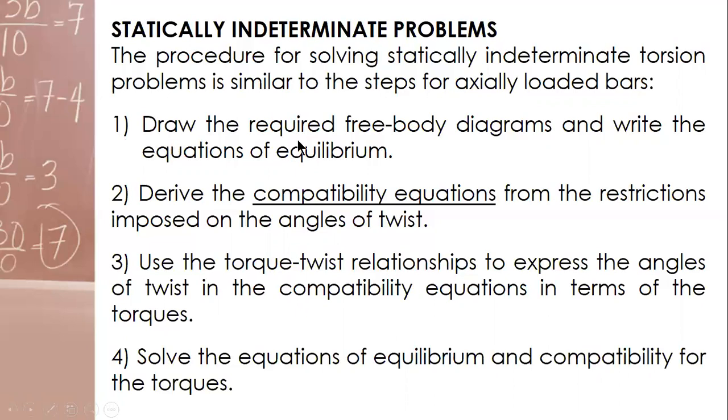So first step is you draw the required free body diagrams and then write the equations of equilibrium. After that, derive the compatibility equations from the restrictions imposed on the angles of twist. So normally from the angle of twist we get the compatibility equations. And then use the torque-twist relationships to express the angles of twist in the compatibility equations in terms of the torques.